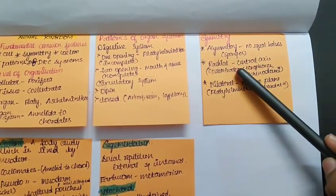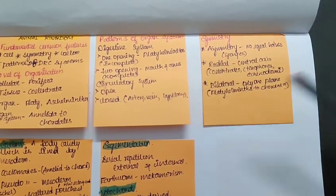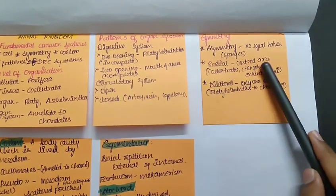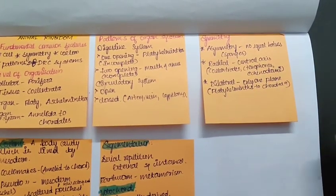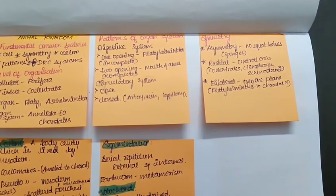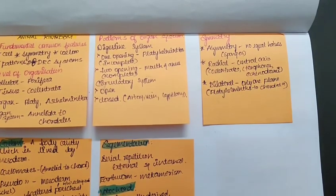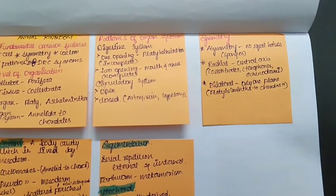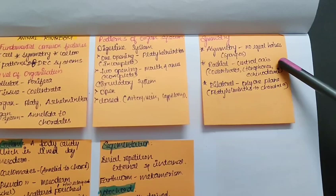Talking about the radial symmetry, like any plane passing through the central axis - the plane should be, the only condition is the plane should pass through the central axis - then it will cut the body into two equal halves. That kind of symmetry is called radial symmetry, and it is seen in Cnidaria, Ctenophora, and Echinoderms.